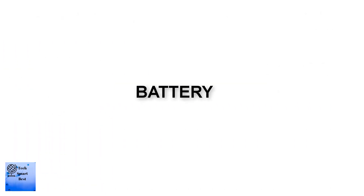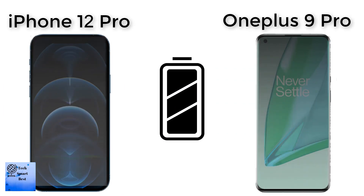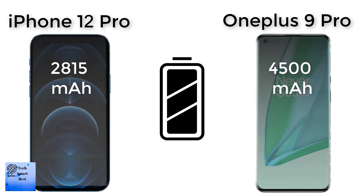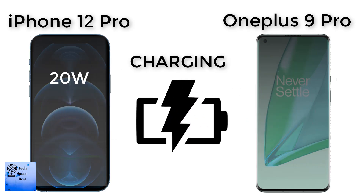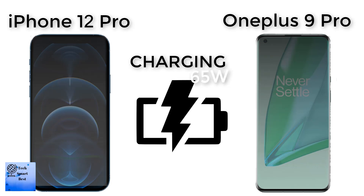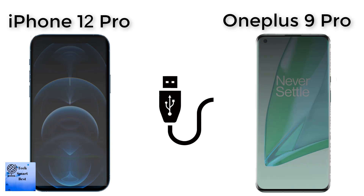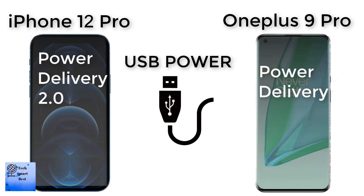The battery comparison between both smartphones. The battery of the OnePlus 9 Pro is 4500 mAh, non-removable. The battery of the Apple iPhone 12 Pro is 2815 mAh, non-removable. The battery charging of the OnePlus 9 Pro supports fast charging at 65W. The Apple iPhone 12 Pro supports fast charging at 20W. Both support USB Power Delivery.